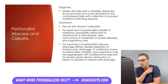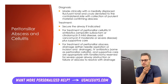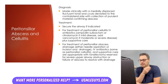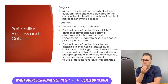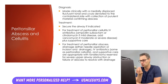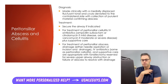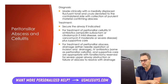Treatment for peritonsillar cellulitis first involves assessing for respiratory compromise and securing the airway. IV antibiotics like ampicillin-sulbactam or clindamycin are used for mild disease, and vancomycin is added for moderate to severe disease. If there's no airway compromise, sepsis, trismus, or other severe signs, a trial of parenteral rather than IV antibiotics can be attempted. For peritonsillar abscess, management is similar but includes drainage — either needle aspiration or incision and drainage — with the same antibiotics given IV. Tonsillectomy is reserved for severe obstruction or recurrent abscesses.